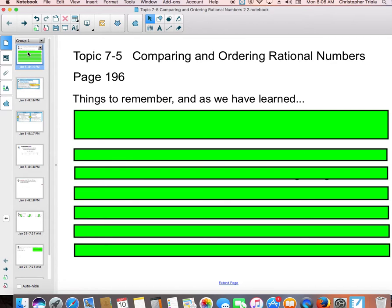Alright. So, anyways, here's what we're going to do. I'm going to briefly go over Topic 7-5, Comparing and Ordering Rational Numbers. It is in your book on page 196.